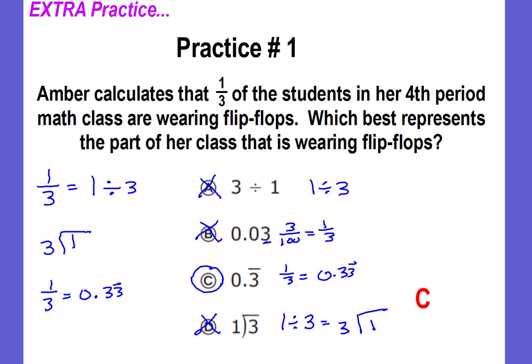Okay, the correct answer is C, three-tenths repeating. If you got the correct answer, great job! You can move on to practice problem number two. If you did not get the answer correct, then I'd like for you to go ahead and pause the video and take a look at the work that is shown and see if you can find where your mistake is before moving to practice problem number two.